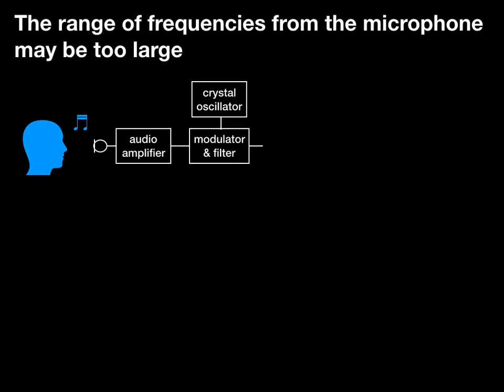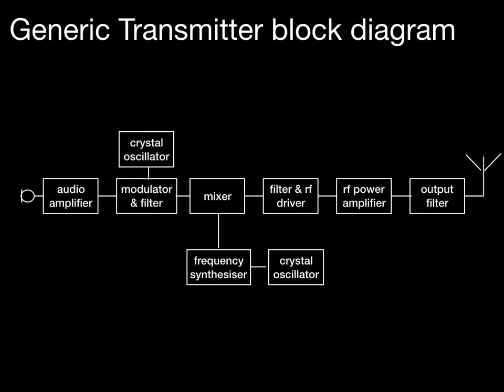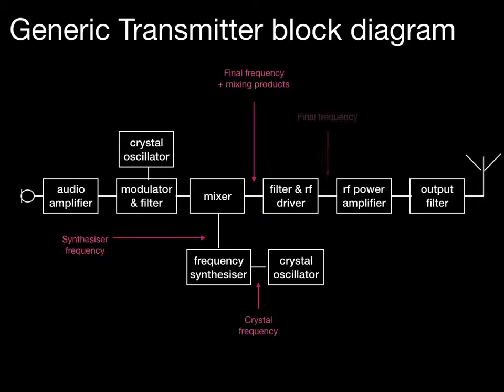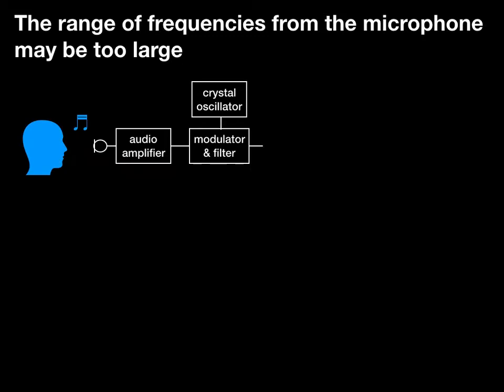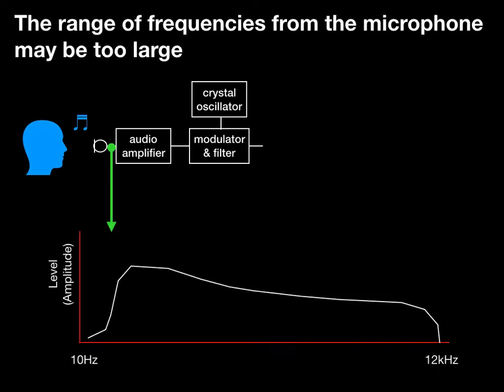Now we'll have a look at some of the boxes individually — the audio amplifier, crystal oscillator, and modulator and filter, which come from the left-hand three boxes of the generic diagram. Out of the microphone we'll have potentially a low-level signal but with quite a wide bandwidth. A high-performance microphone might pick up signals at far higher frequencies than we wish to transmit.